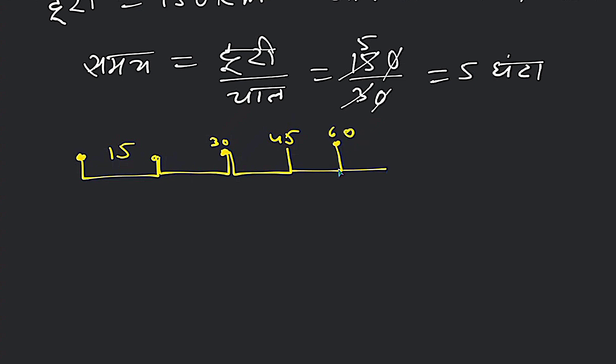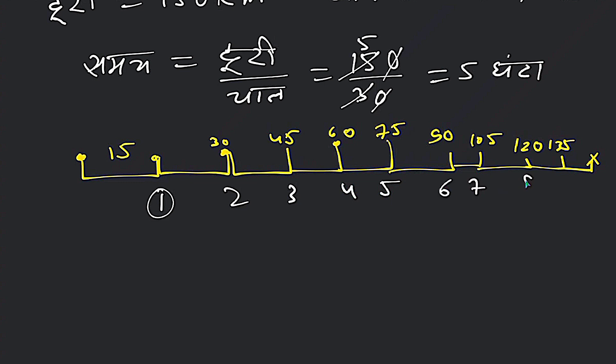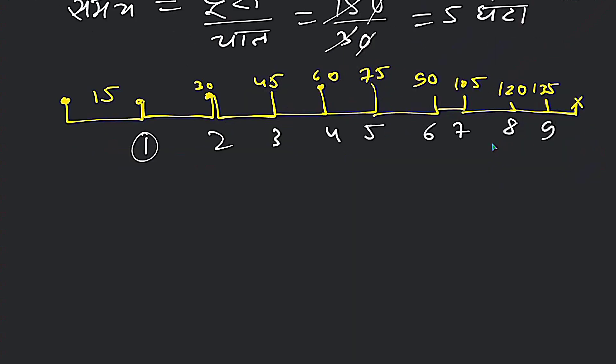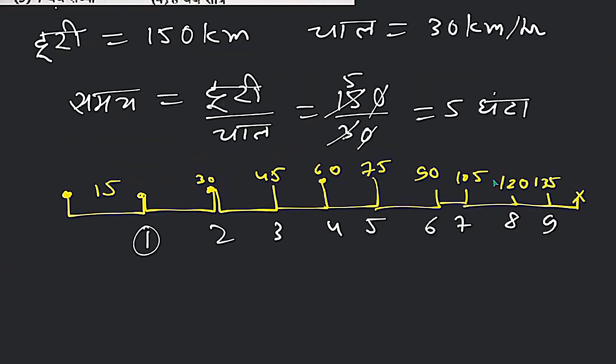It starts at 15 km. Then it goes 30 km, 45 km, 60 km, then 75, 90, 105, 120, 125, 135, 150. So we take these intervals. So we have to count these. We have to count these stops.